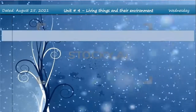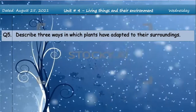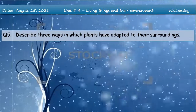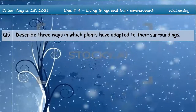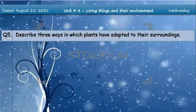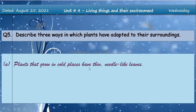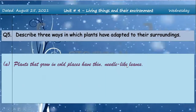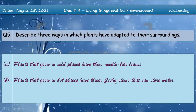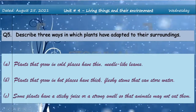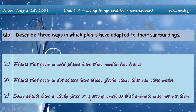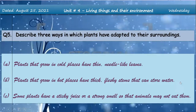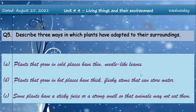Now coming to today's work: question number five and six. Question number five is on book page 41 — notebook work, so you write it in your notebook. You have to describe three ways in which plants have adapted to their surroundings: A) plants that grow in cold places have thin needle-like leaves; B) plants that grow in hot places have thick, fleshy stems that can store water; C) some plants have a sticky juice or strong smell so that animals may not eat them.